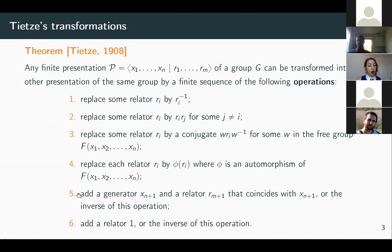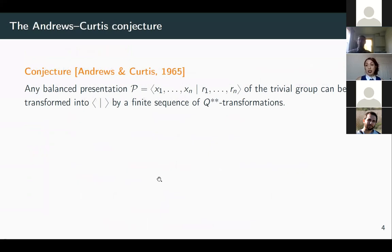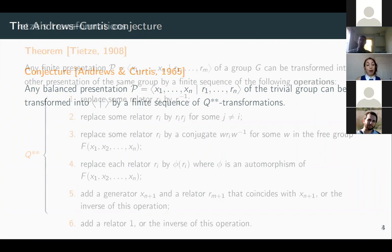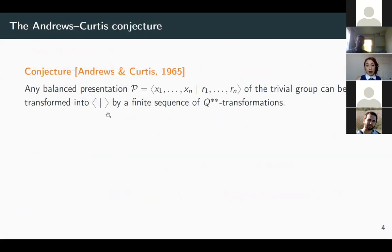Operations one through five preserve the deficiency of the group — the difference between the number of relators and generators — while operation six changes the deficiency. Operations one through five are called Q** transformations, and they are important because the Andrews-Curtis conjecture states that any balanced presentation of the trivial group — where balanced means equal numbers of relators and generators — can be transformed into the empty presentation by a finite sequence of Q** transformations. So operation six is not necessary to trivialize it.